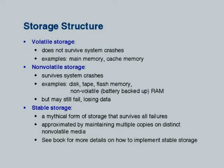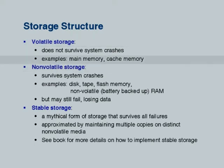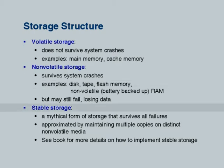A little more terminology. Storage can be classified as volatile or non-volatile. Volatile is main memory; non-volatile is flash or disk. There is one more level in the hierarchy called stable storage. Stable storage is basically a form of storage which survives all failures. Of course, it is mythical — you cannot actually survive all failures.